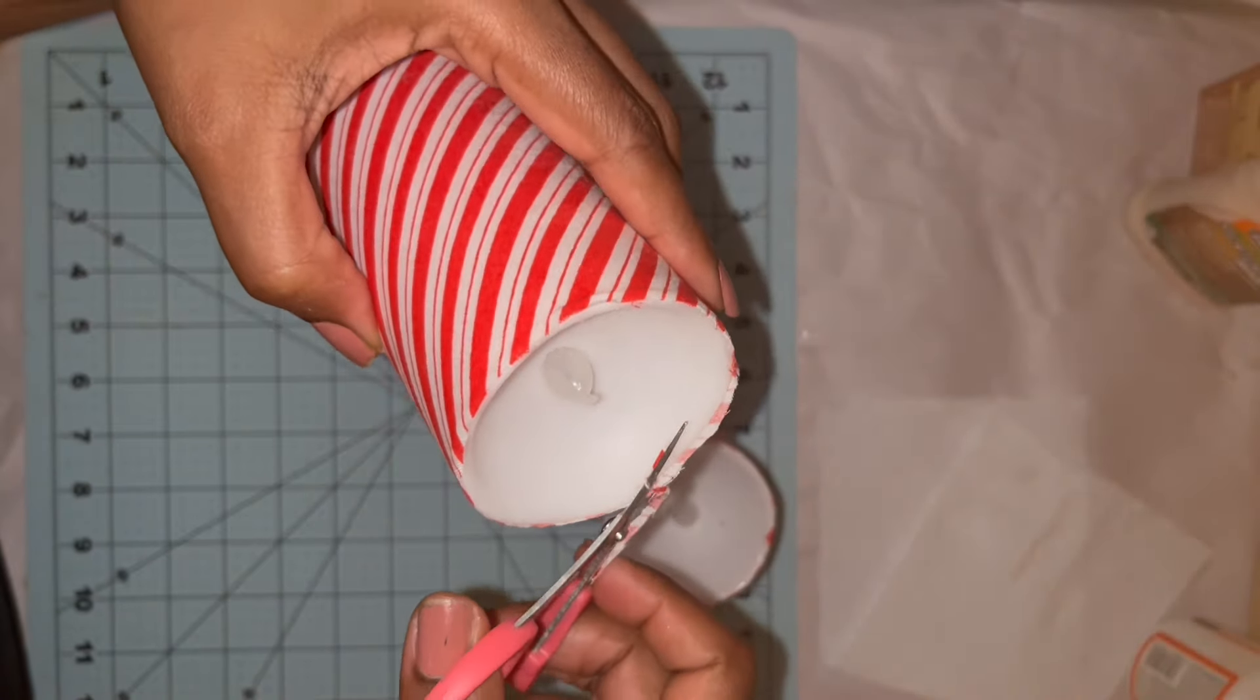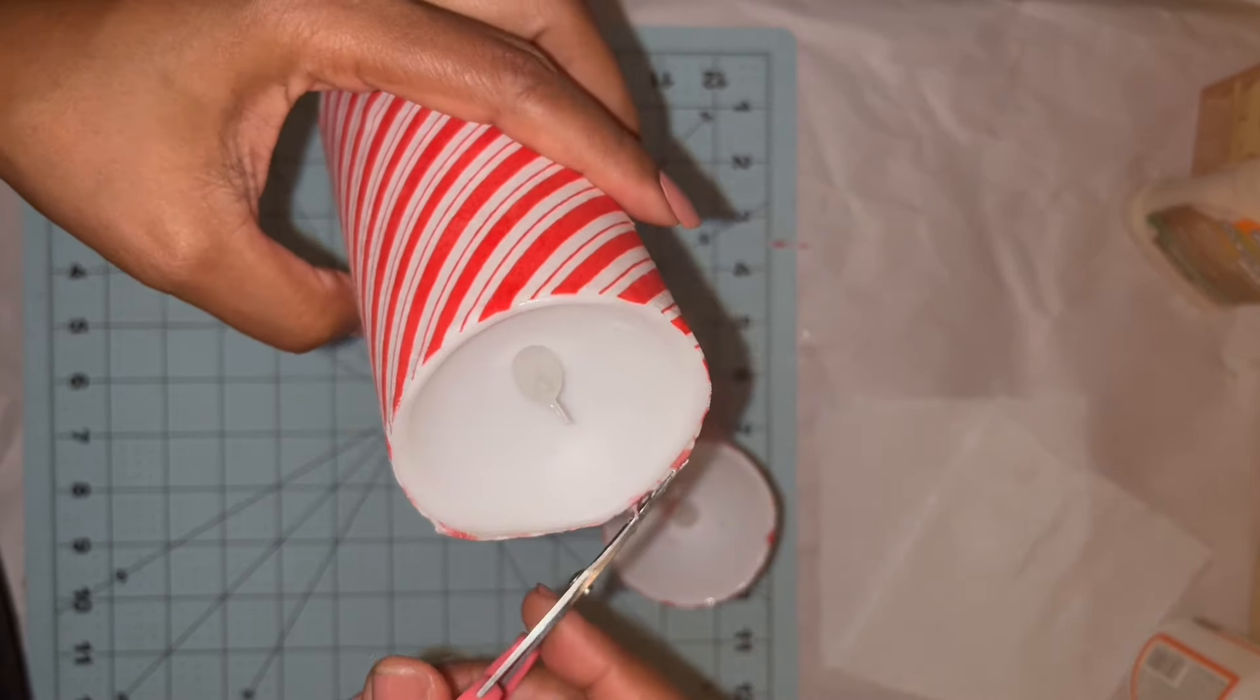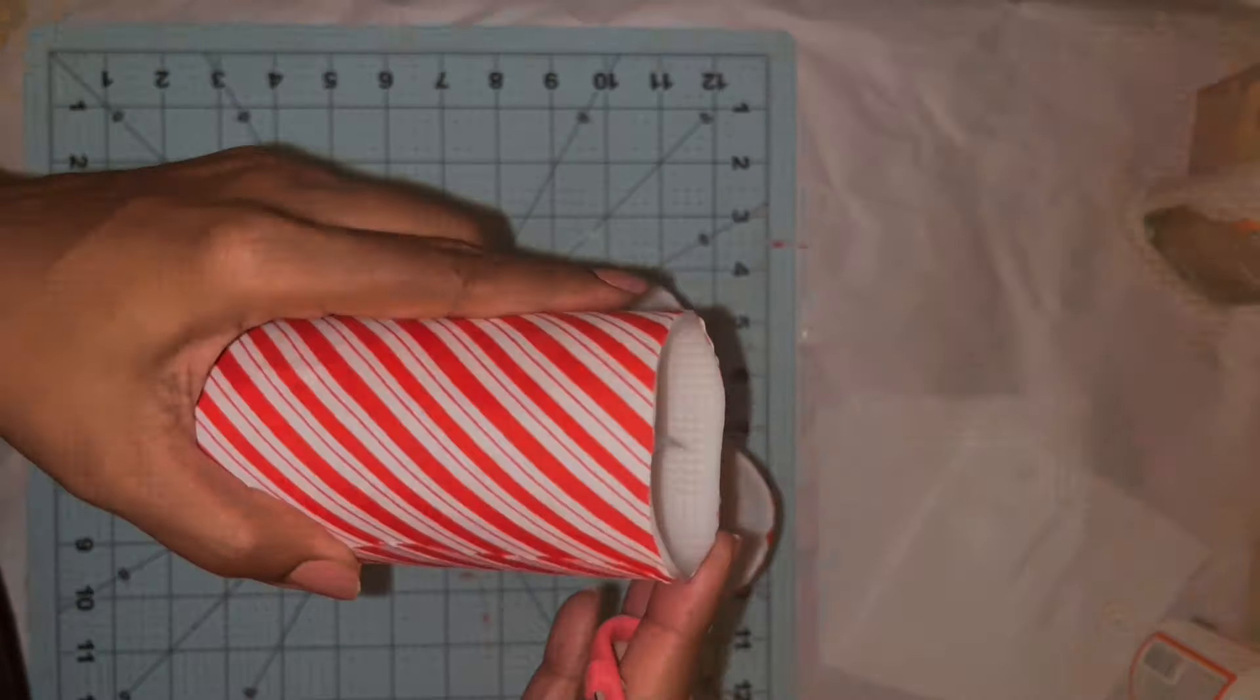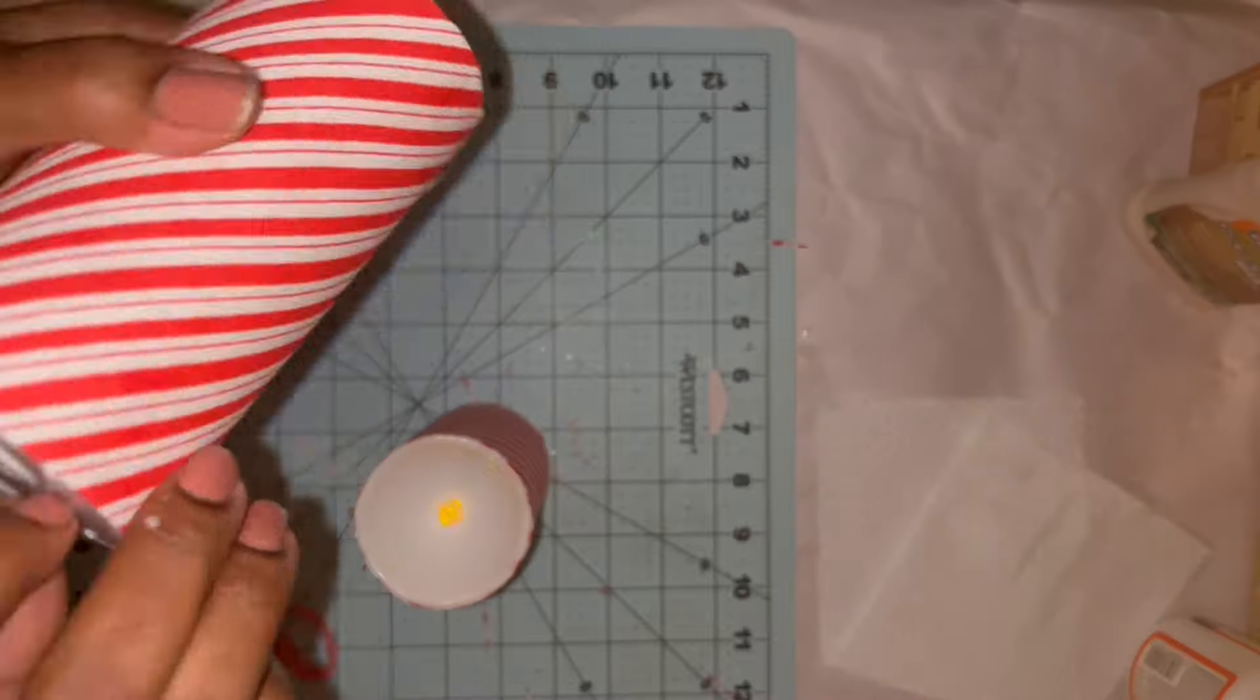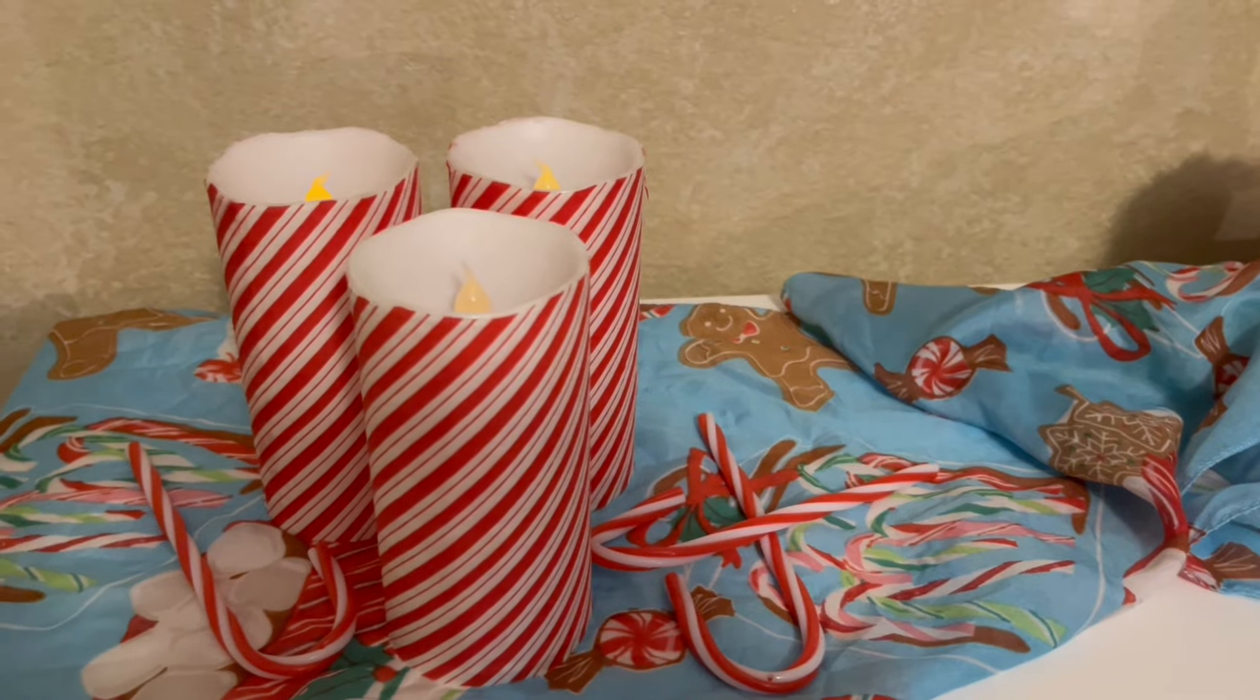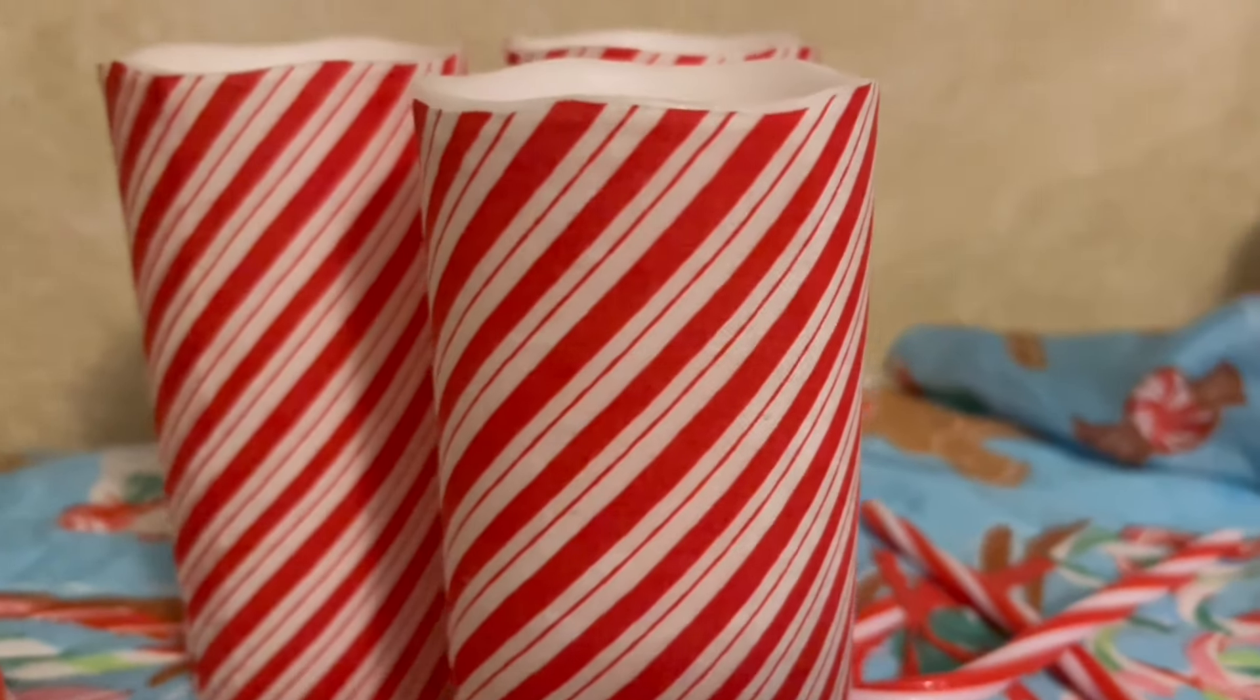So I let the candles set up and dry for about an hour, hour and a half, and they were dry to the touch. So then I just went around with my detail scissors and snipped off the excess fabric, pulled the tab and turned them on. And one of them didn't want to come on, and I'm like, come on. I pressed into the battery and it kind of started to flicker a little bit. But you know, for a dollar twenty-five, what do I expect?